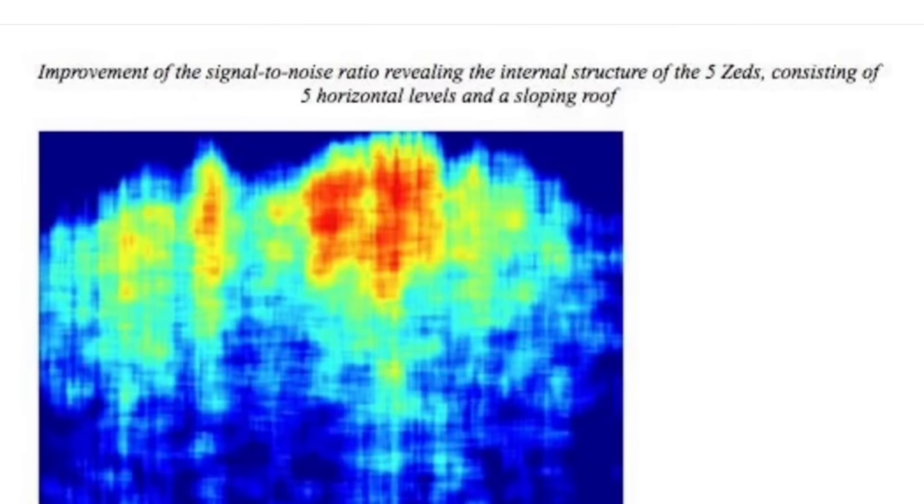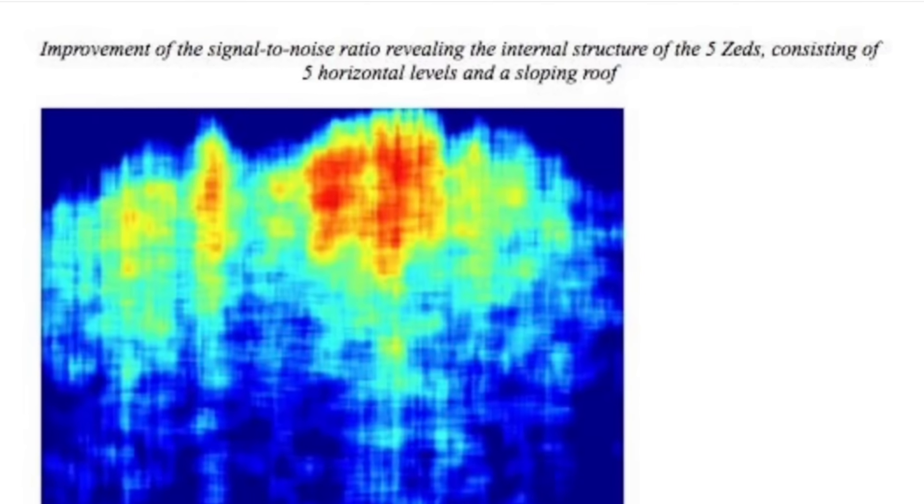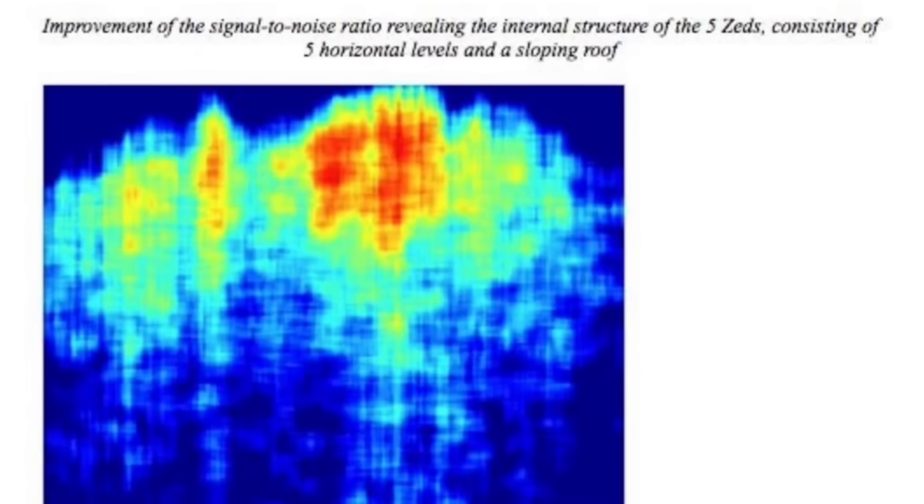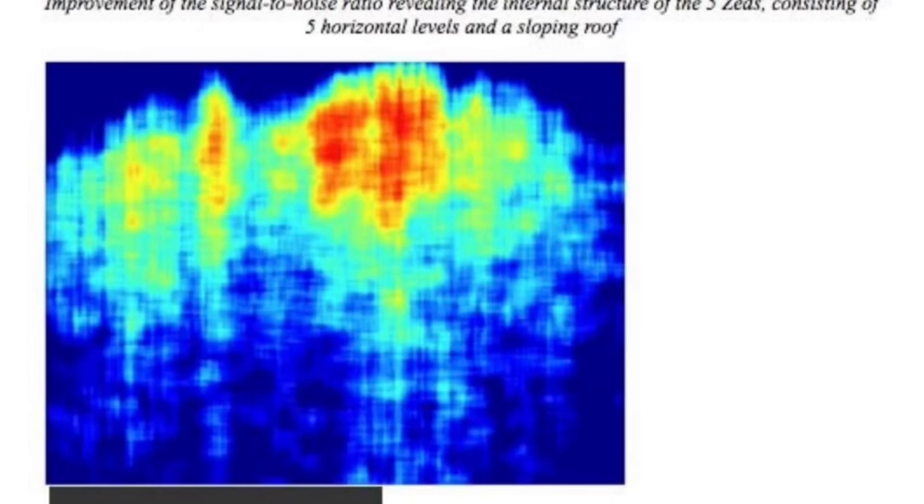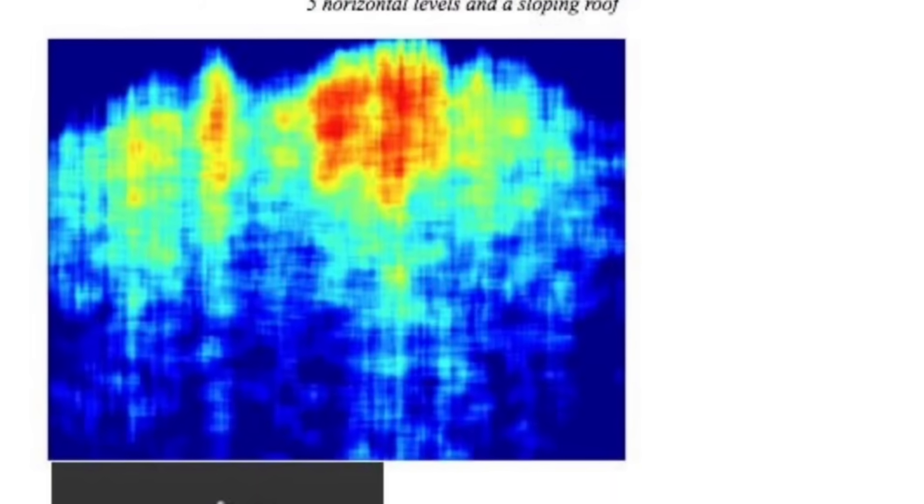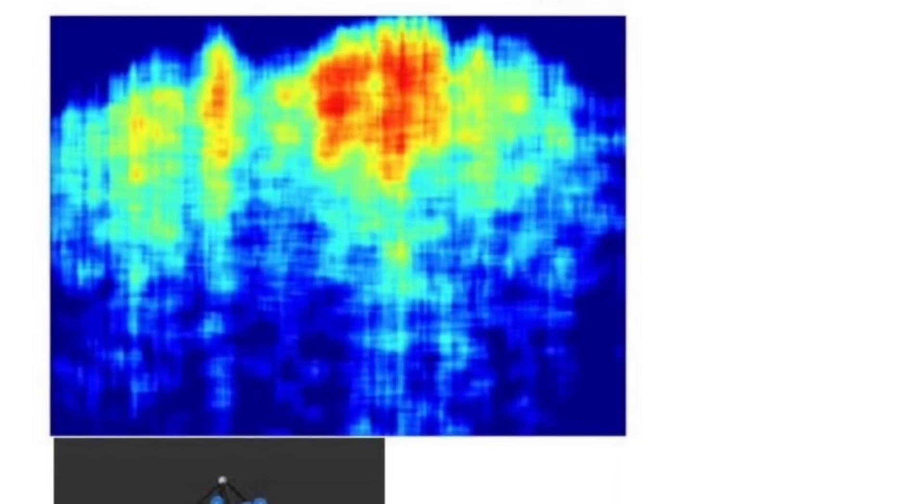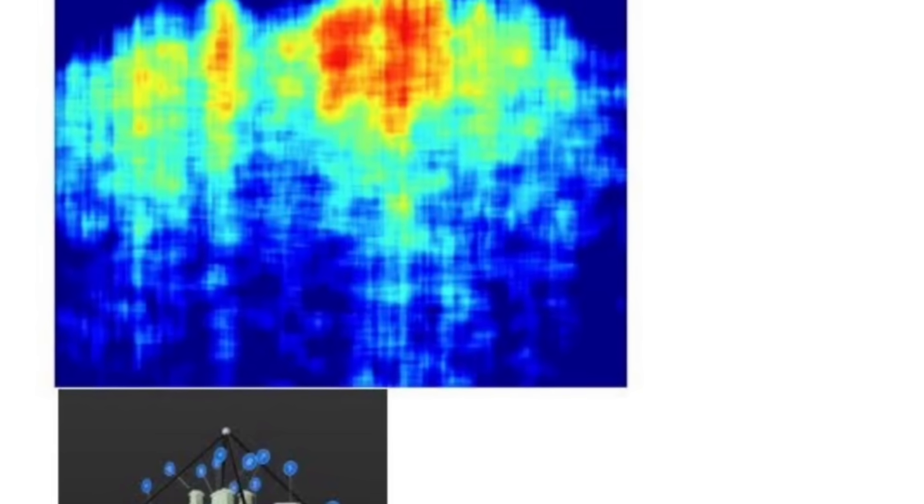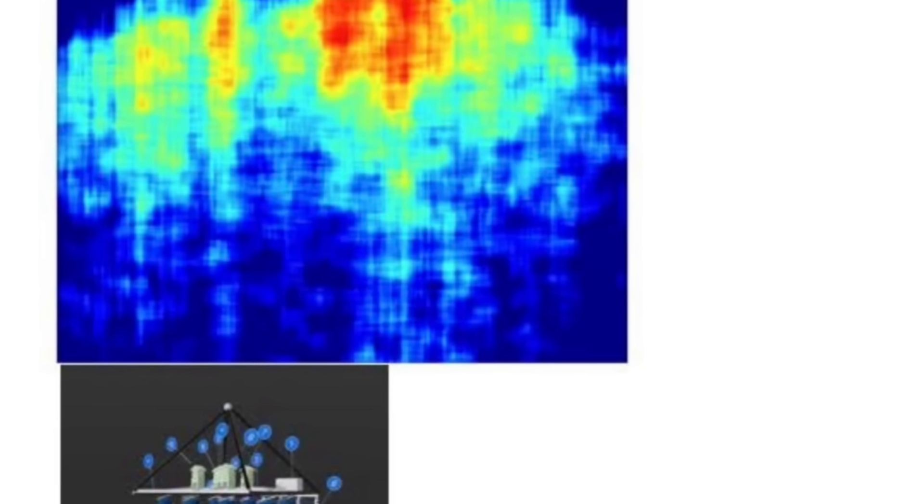On the next page it says that improvements of the signal to noise ratio revealing the internal structure of the five Zs consisting of five horizontal levels and a sloping roof. This is the raw pictures of the data that they used to create their model, and this is the model.